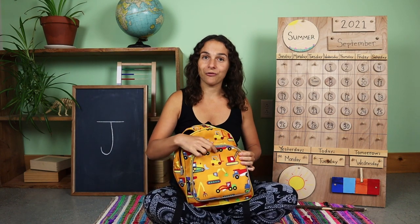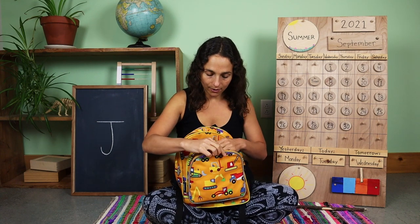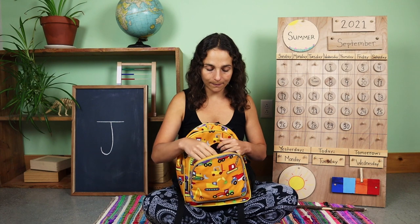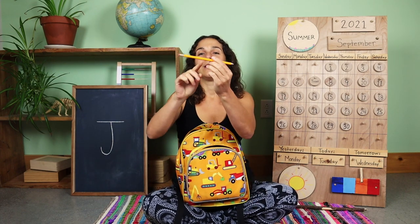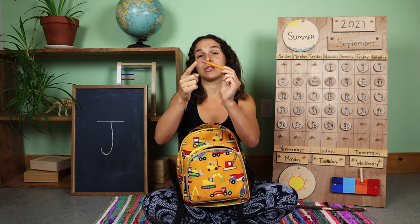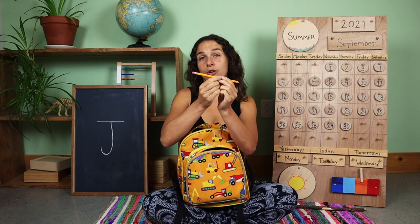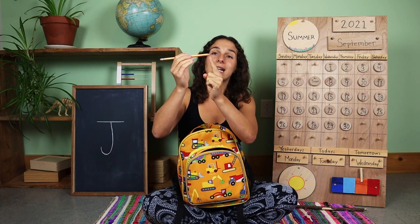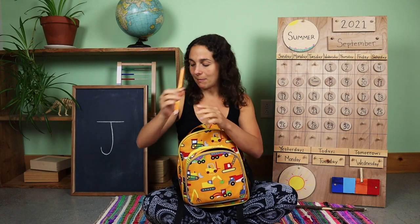Now let's open up this front pocket and see what I have inside. It looks like all of these tools are used for writing or coloring. First, I have a pencil. This pencil is used for writing. On one end of the pencil is an eraser, used to erase whatever you've been writing or drawing if you've made a mistake. At the tip of the pencil is where the lead is, and the lead is what is used to write with.